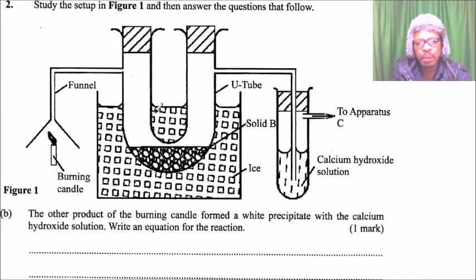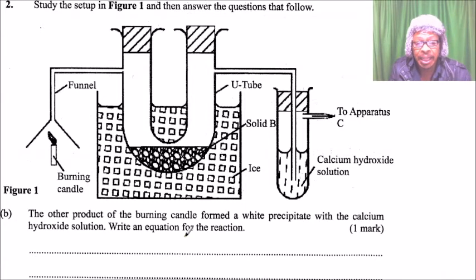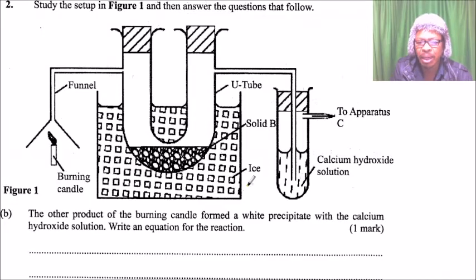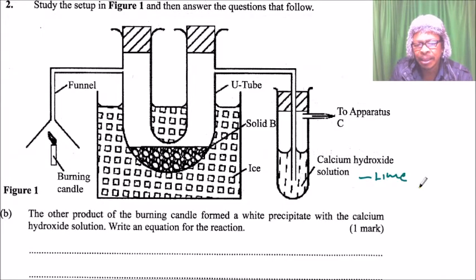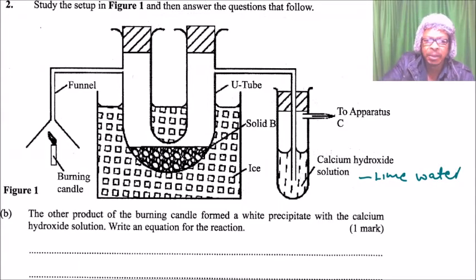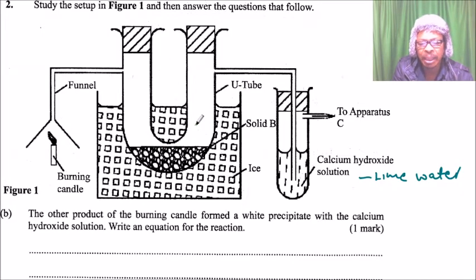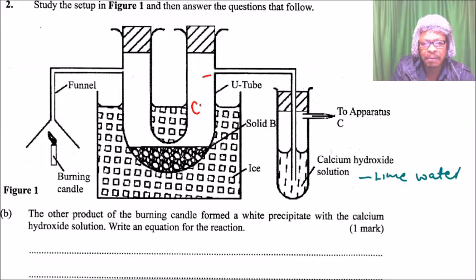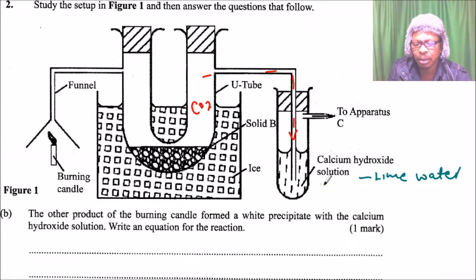Now for part B: the other product of burning the candle formed a white precipitate with calcium hydroxide solution. Write a light equation. Calcium hydroxide solution is also known as lime water. The other product is carbon dioxide — it is a gas, so it passes through solid B, goes through this pipe here, and combines with the calcium hydroxide or lime water.